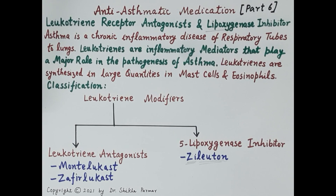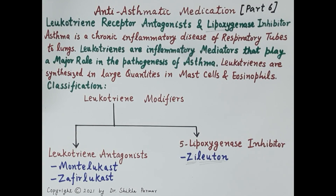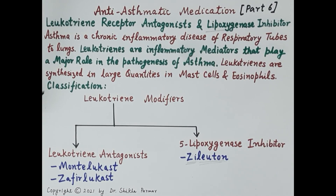As we all know, asthma is a chronic inflammatory disease of respiratory tubes that carry air to and from the lungs. Leukotrienes are inflammatory mediators that play a major role in the pathogenesis of asthma. Leukotrienes are synthesized in large quantities in cells like mast cells and eosinophils.